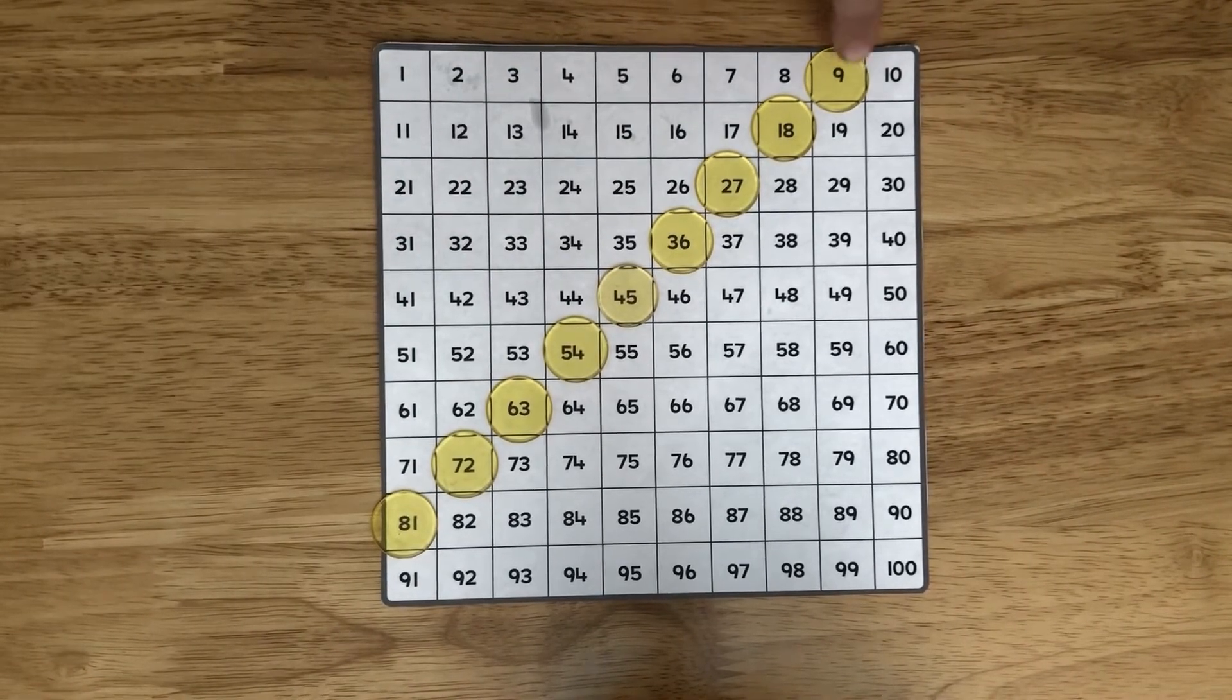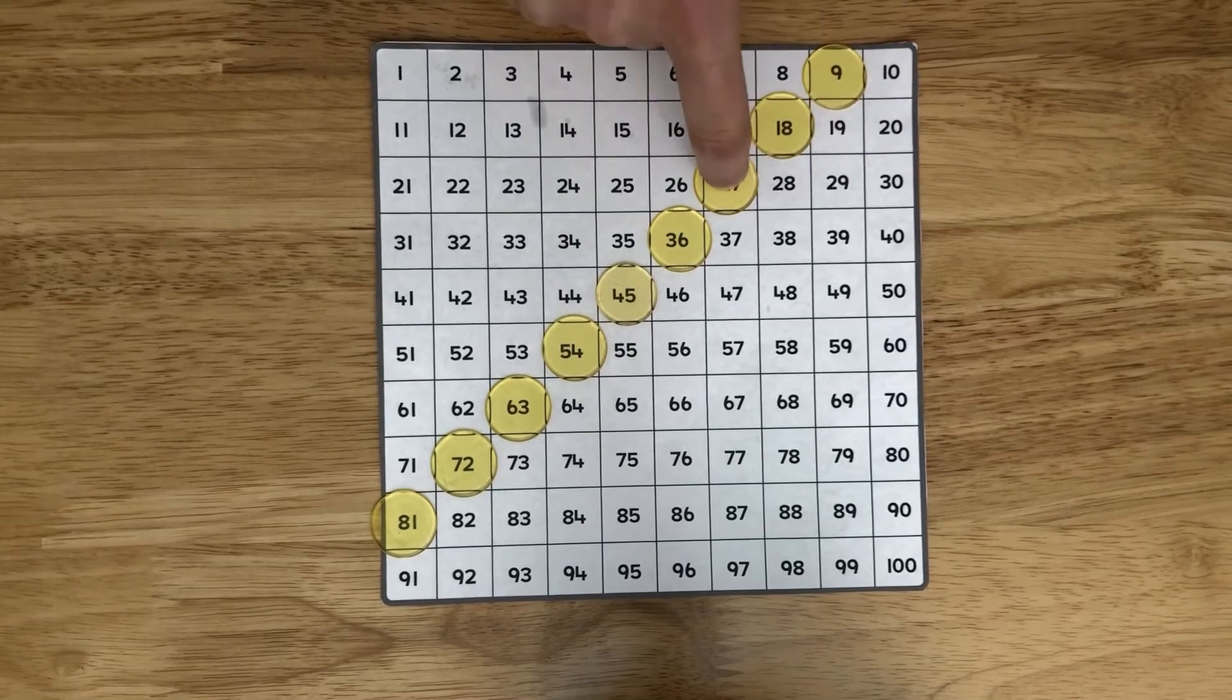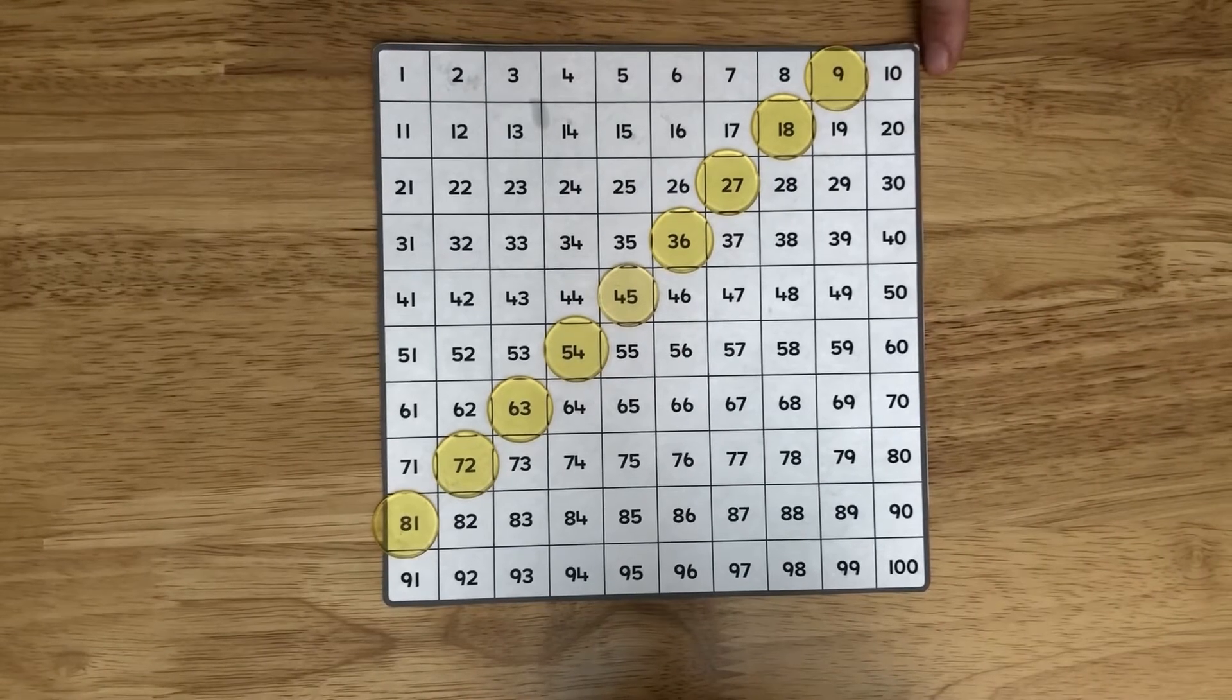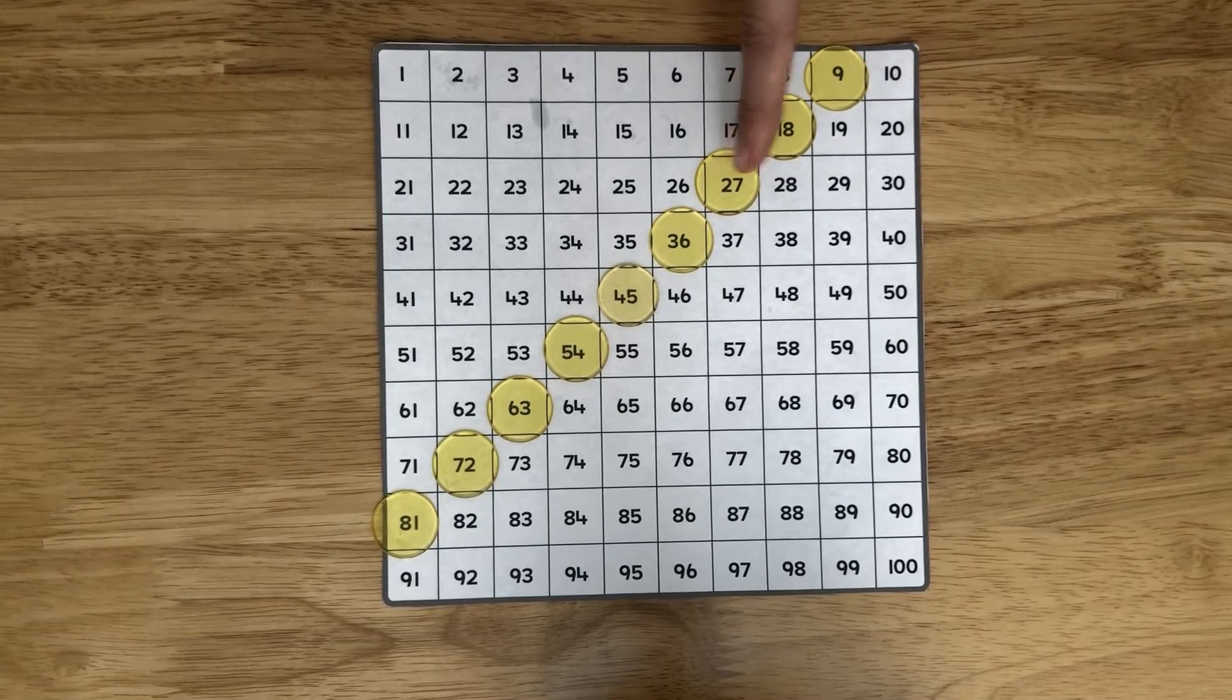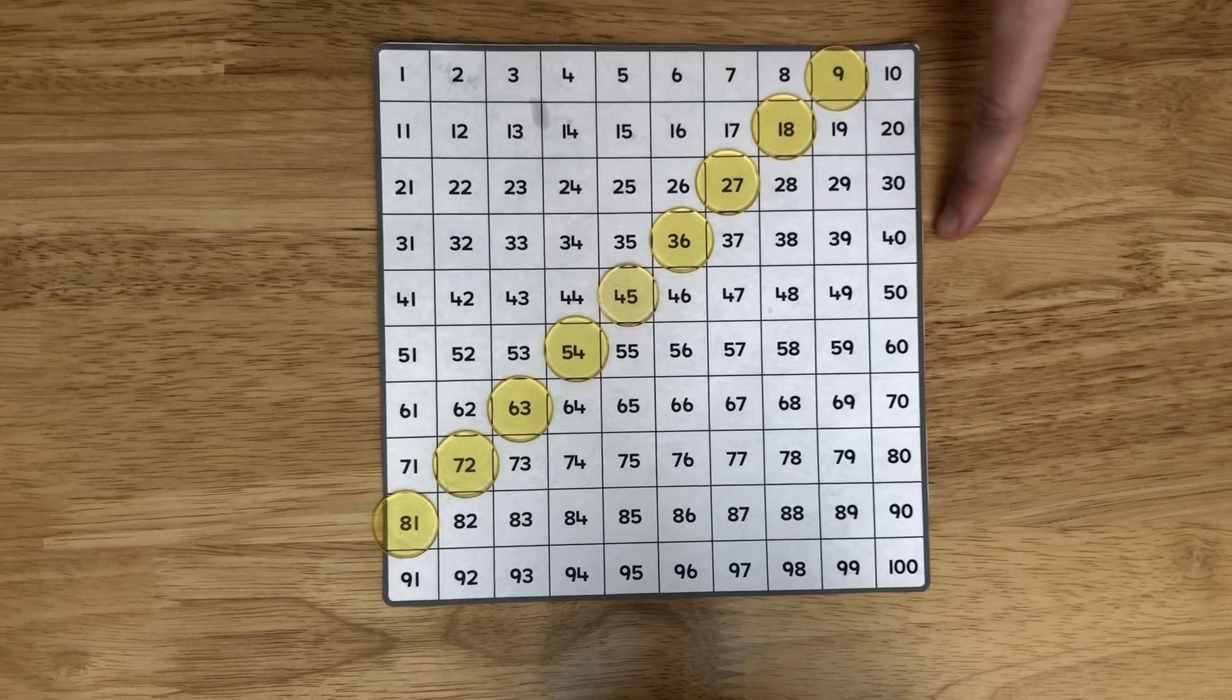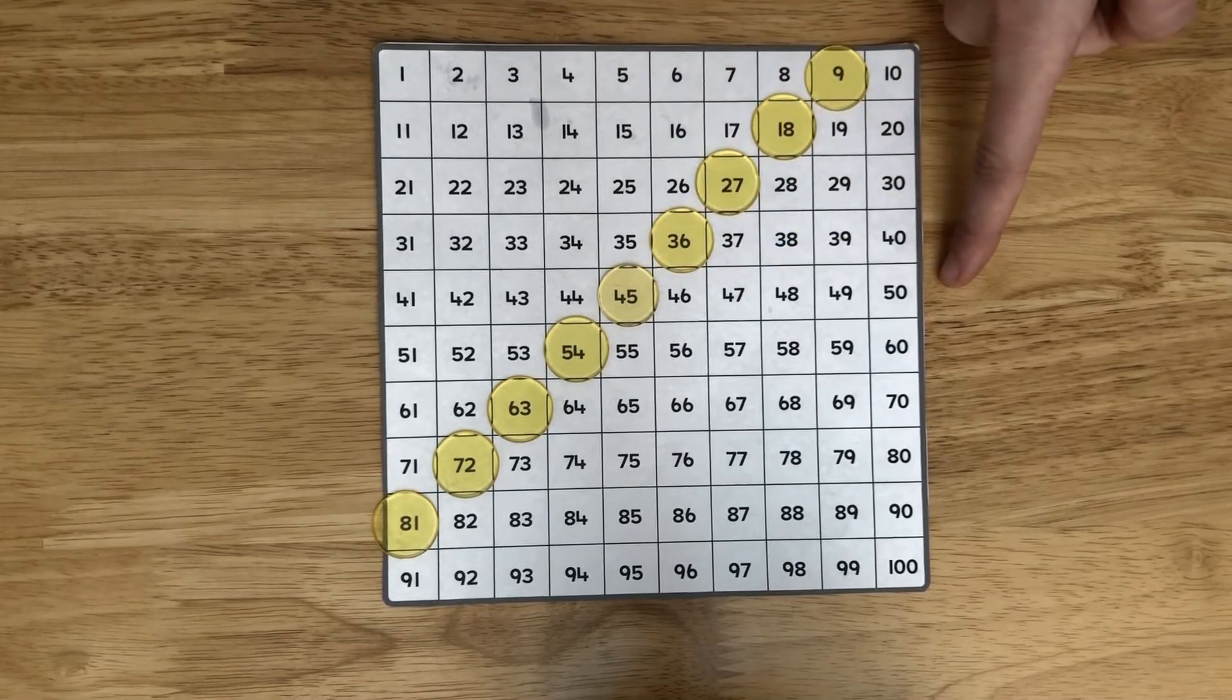There's also a pattern going this way. One down and one across. One down and one across. Nine is 1 away from 10. 18 is 2 away from 20. 27 is 3 away from 30. 36 is 4 away from 40. 45 is 5 away from 50.